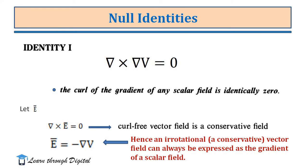So, curl of E-vector is 0. Hence, an irrotational or conservative vector field can always be expressed as a gradient of a scalar field. So, E-vector is equal to the negative gradient of V.